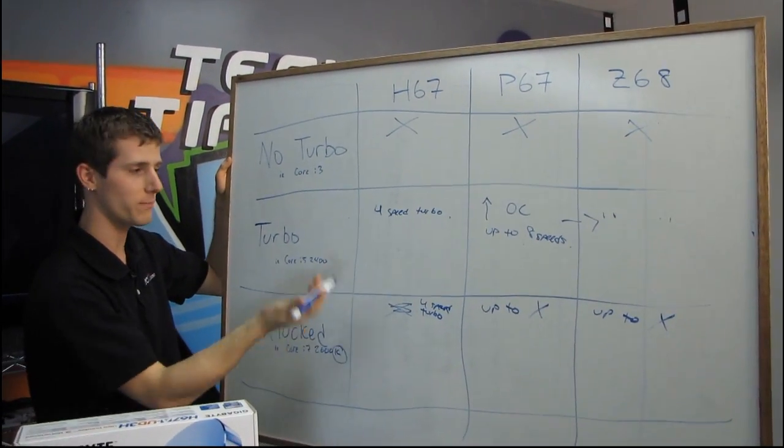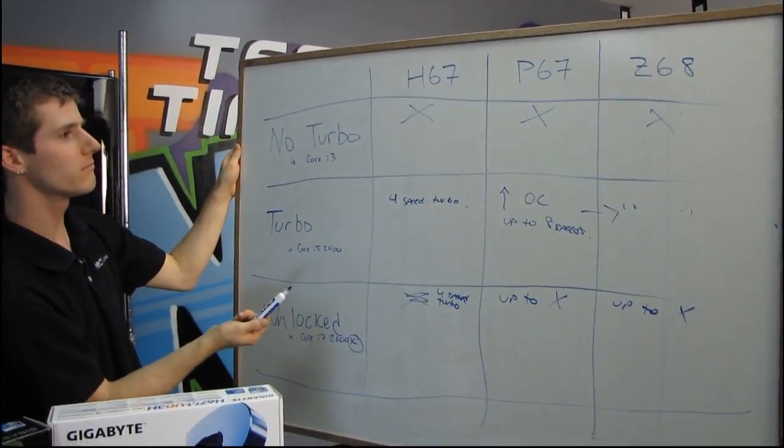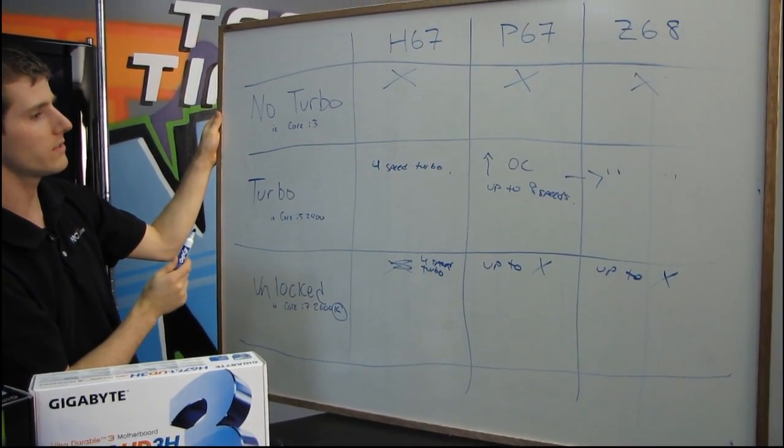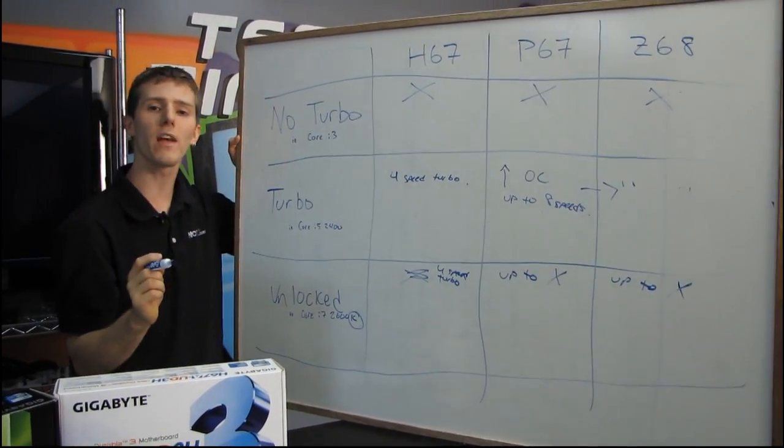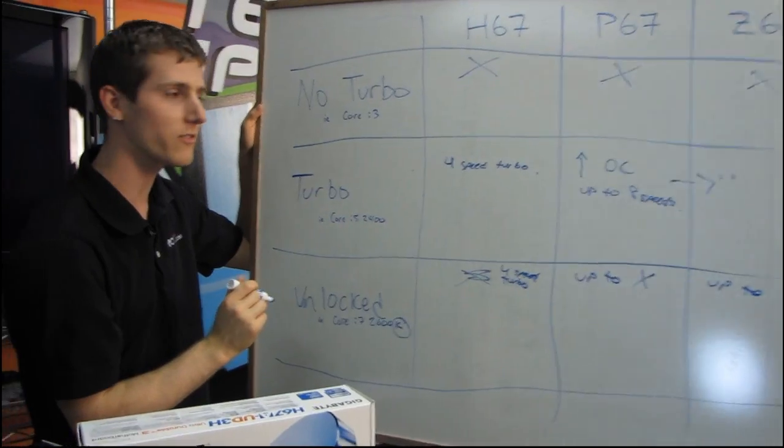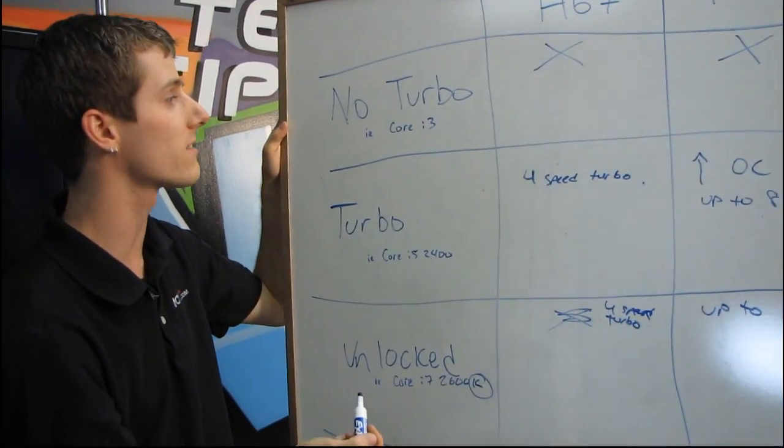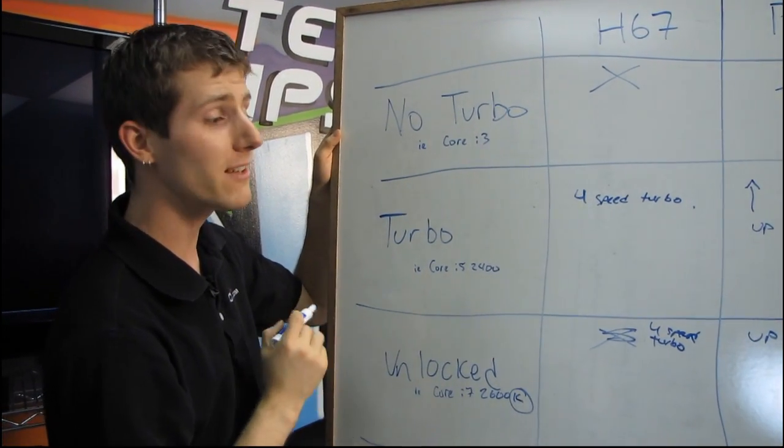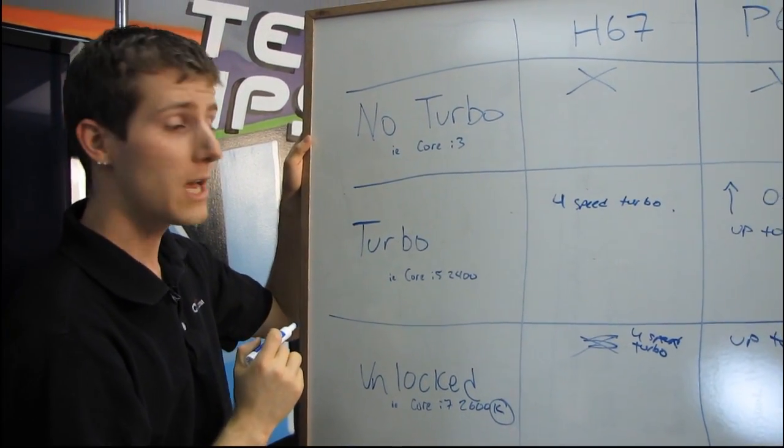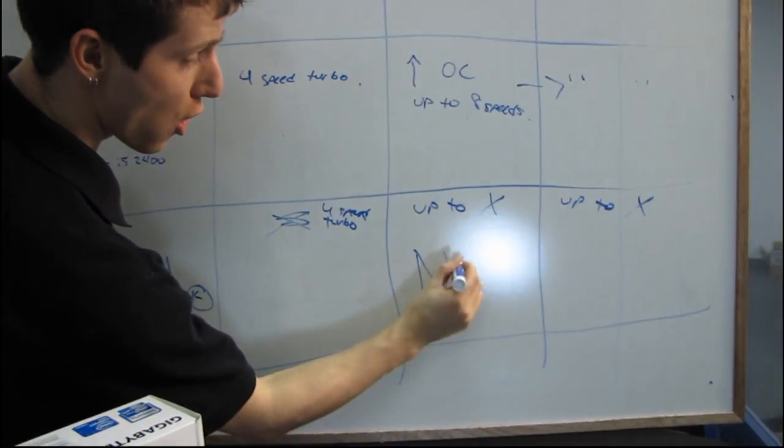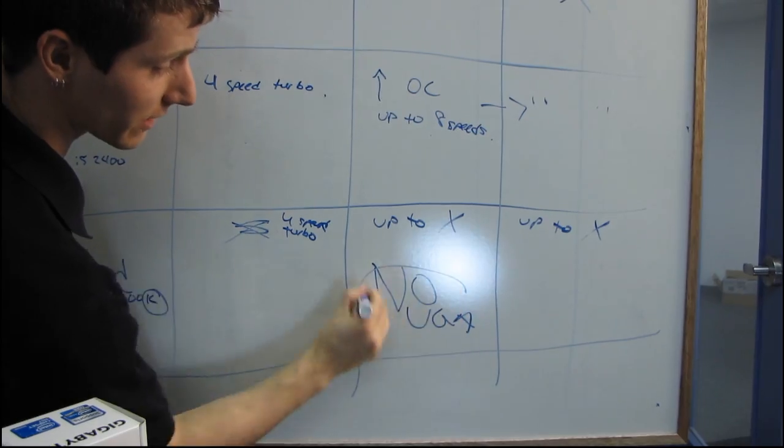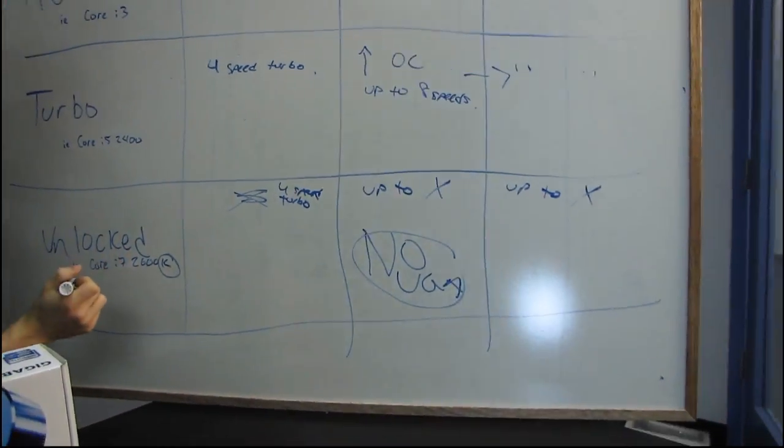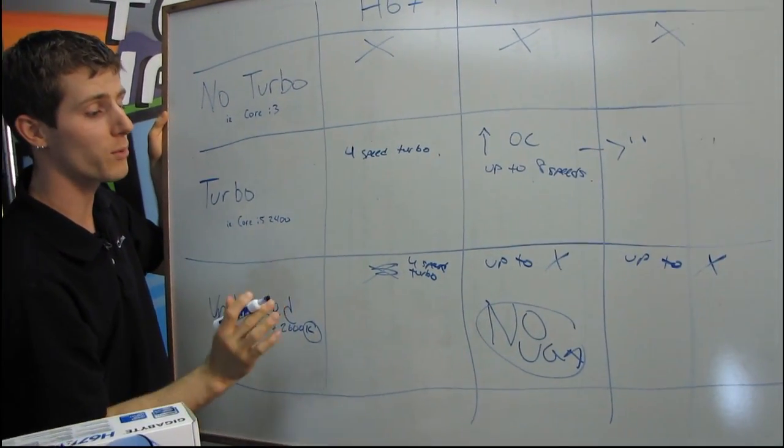So if Z68 is exactly the same as P67, then what's going on here? Let's talk about the other important feature of these new Core i-series processors, and that is their onboard graphics. There are a few different kinds of onboard graphics built into these chips. The K-series chips actually have the highest-end onboard graphics, which is pretty funny because on P67, where you can actually overclock these K-series chips, you have no support for onboard video.